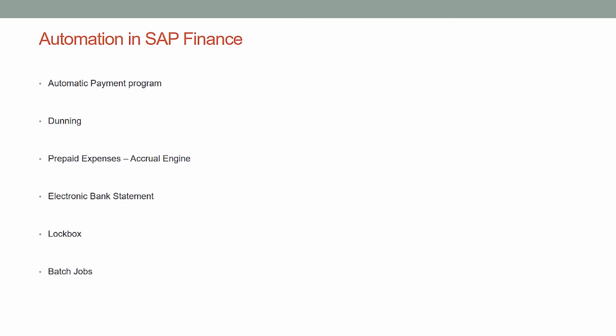The next step of automation is the Electronic Bank Statement, which we have not yet discussed and will cover in subsequent sections. In short, the Electronic Bank Statement makes the bank reconciliation process very easy.